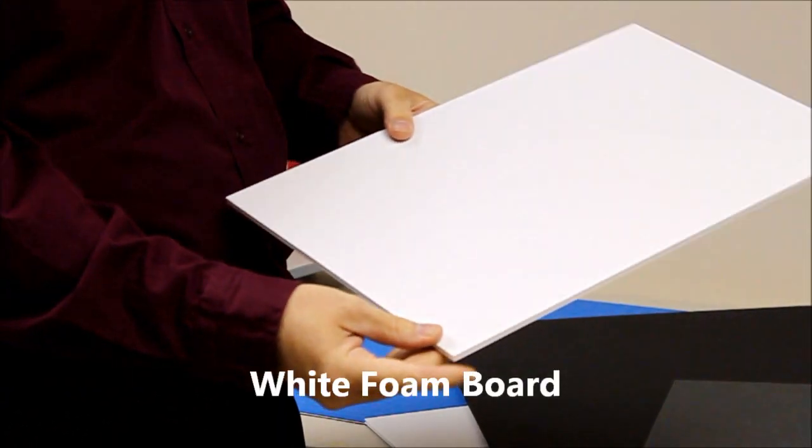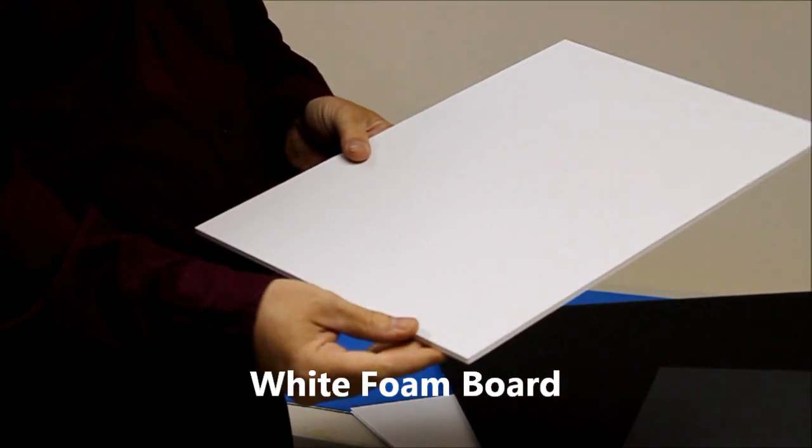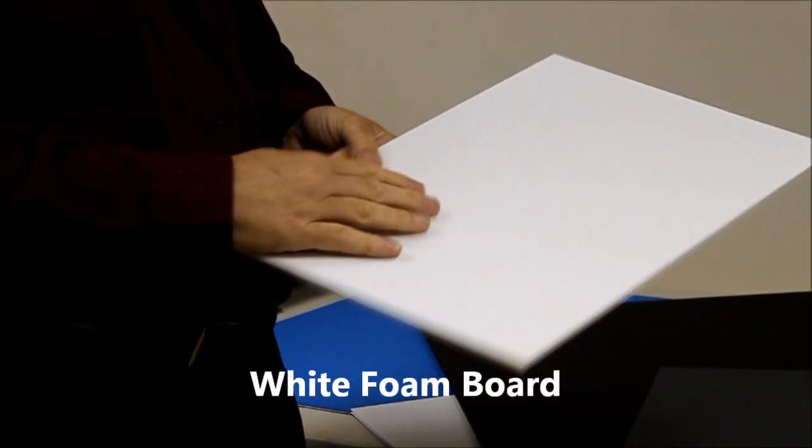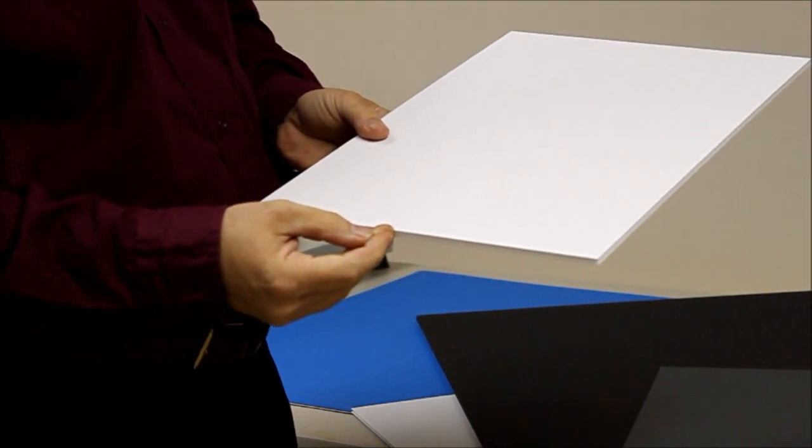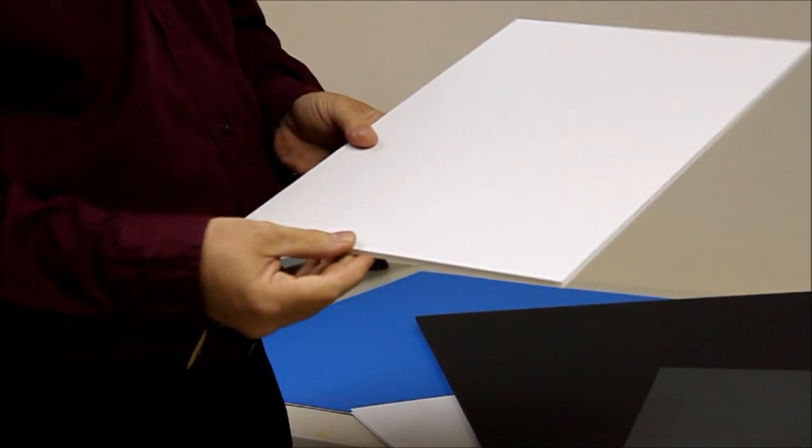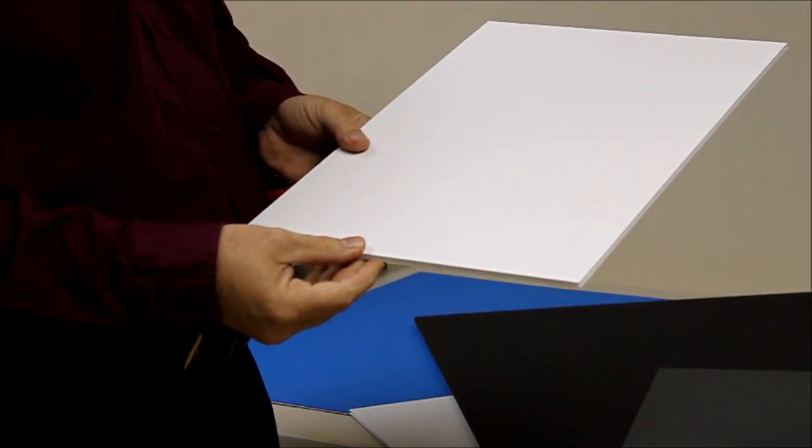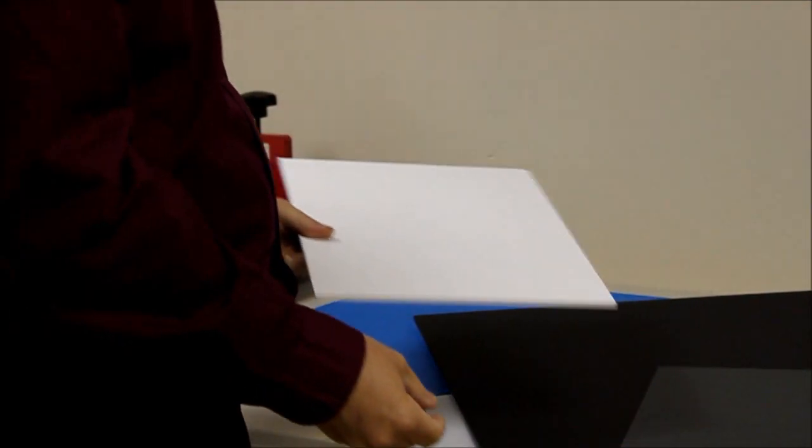The first is foam board, which is the most common and the most popular board. It has a paper surface on both sides of a foam board. Basically, it's lightweight, it's economical, and it's easy to cut and easy to fabricate.